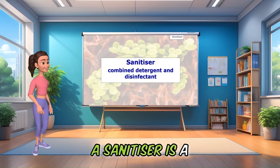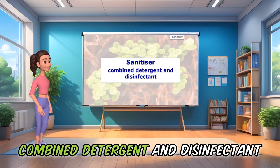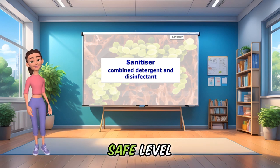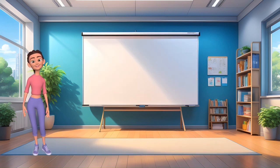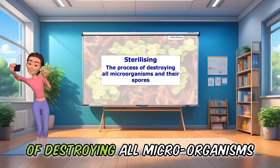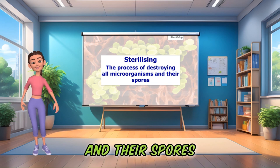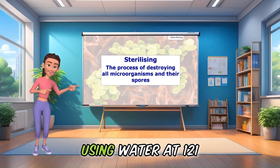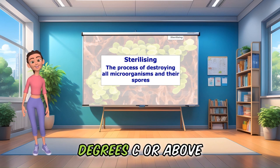A sanitiser is a combined detergent and disinfectant, so it cleans and reduces bacteria to a safe level. Sterilising is the process of destroying all microorganisms and their spores; this can be achieved using water at 121 degrees C or above.